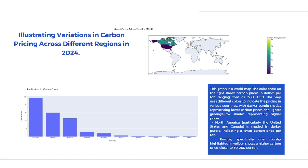Regarding CCUS capacity and efficiency, we analyzed how efficiently CCUS projects are using their announced capacities. Low utilization may point to inefficiencies in project execution. Different sectors — such as power generation, cement, and oil and gas — vary in their efficiency at implementing CCUS technologies, with power generation often being more successful.